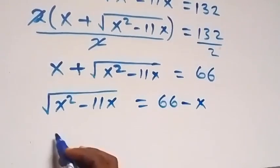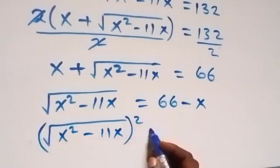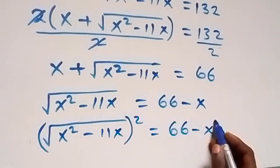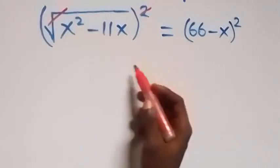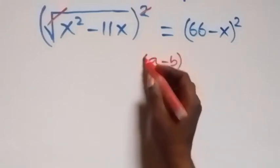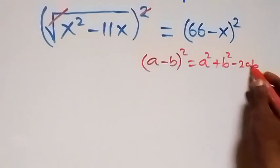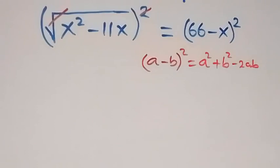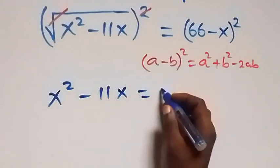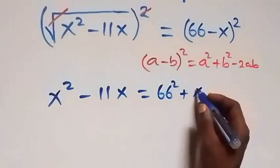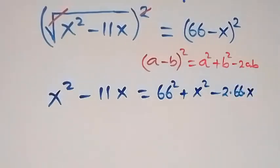That gives us square root of x squared minus 11x, all squared, now equals to 66 minus x, all squared. The square cancels the square root on the left. The right hand side follows from a minus b all squared, which we can write as a squared plus b squared minus 2ab. So what we have here is x squared minus 11x equals to 66 squared plus x squared minus 2 times 66 times x.